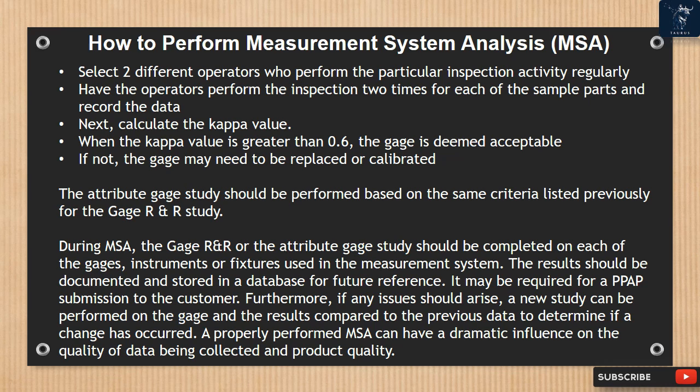During MSA, the gauge R&R or the attribute gauge study should be completed on each of the gauges, instruments, or fixtures used in the measurement system. The results should be documented and stored in a database for future reference, and it may be required for a PPAP submission to the customer. Furthermore, if any issues should arise, a new study can be performed on the gauge and the results compared to the previous data to determine if a change has occurred. A properly performed MSA can have a dramatic influence on the quality of data being collected and product quality.